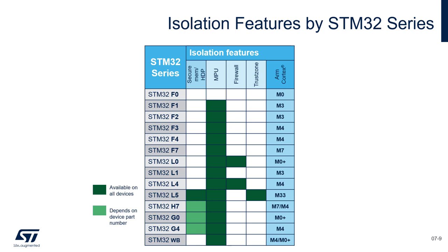This table summarizes the isolation features with respect to different STM32 families. Secure memory, also called HDP, is present on L5, H7, G0 and G4. MPU is on every family except F0. Firewall is present on L0 and L4. The new microcontroller STM32 L5 has secure memory, MPU and also TrustZone, which is by far the best solution to isolate the secure and non-secure application.